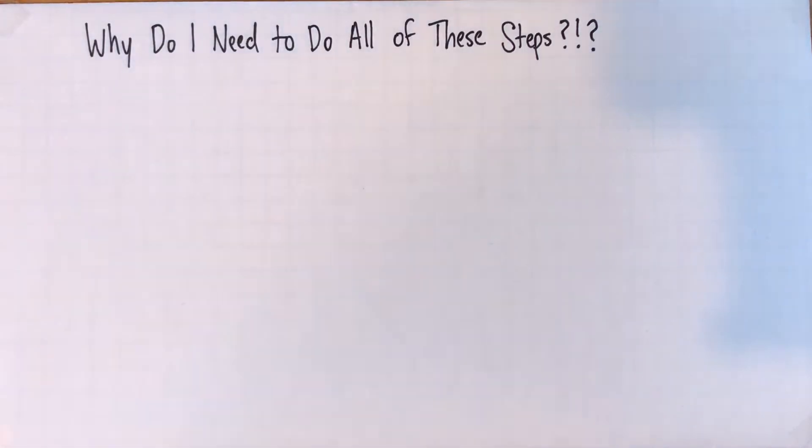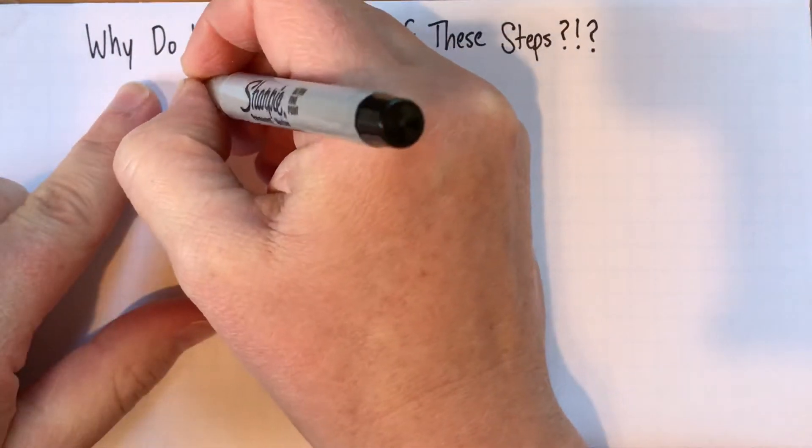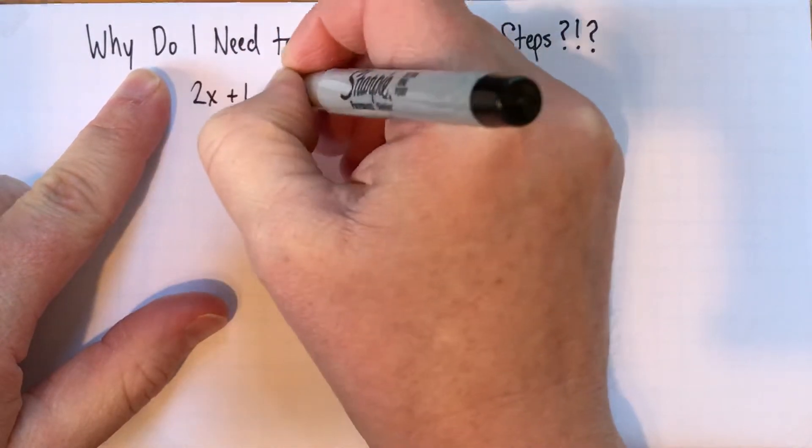Hi. In this video, I want to answer a really important question that a lot of students have when they're first starting to learn how to solve equations algebraically. And the question they have is, why do I need to do all of these steps? So they get an equation that looks something like, let's say, 2x plus 1 equals 5.